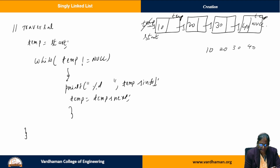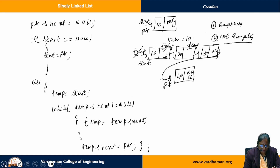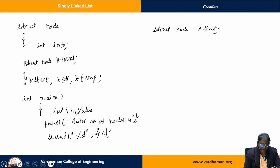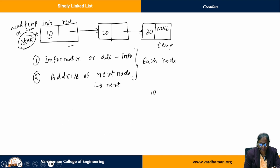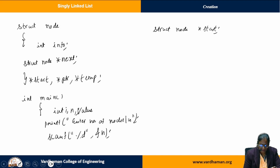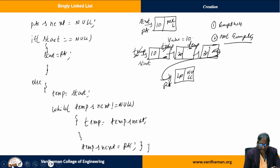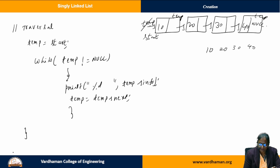Then we can close the program. As we have taken the return type for main, before closing, we have to write return with an integer number.